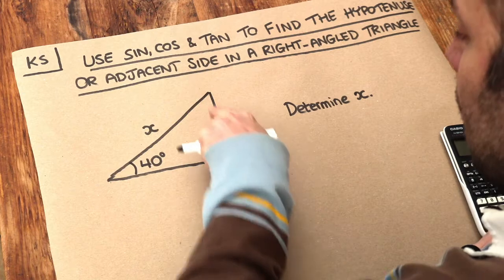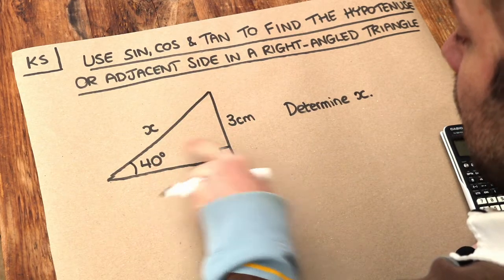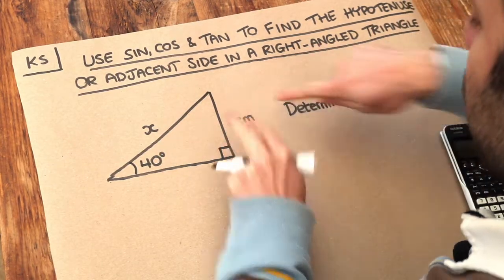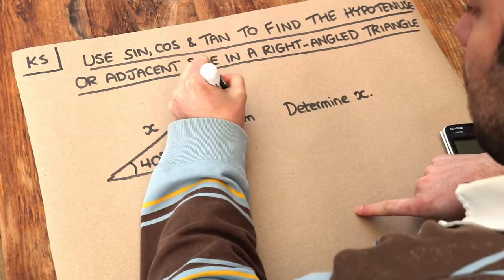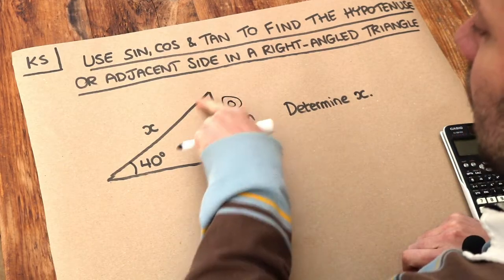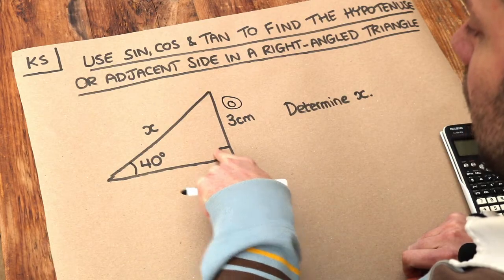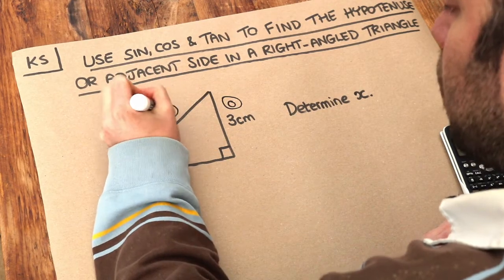So do you remember the side opposite the angle given here, ignoring the 90 degrees, this side is opposite this angle, and it's known as the opposite because it's opposite the angle. And this is the longest side of the triangle, the longest side is always opposite the right angle in the right angle triangle, and that is known as the hypotenuse.